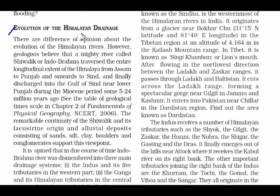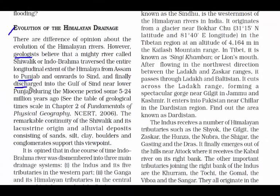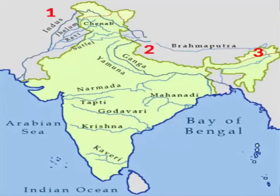Many geologists believe that during the Miocene period — 5 to 24 million years ago — there was a mighty river called Shivalik or Indo-Brahma, which traversed the entire longitudinal extent of the Himalayas from Assam to Punjab and discharged into the Gulf of Sindh. In due course of time, this Indo-Brahma river was dismembered into three main drainage systems: the Indus with five tributaries in the west, the Ganga and its Himalayan tributaries in the center, and the Brahmaputra in Assam and its Himalayan tributaries in the east.